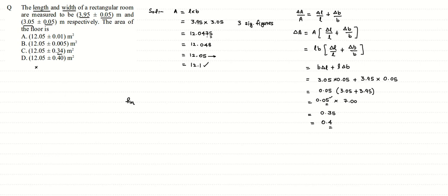The final answer should have been 12.1 plus minus 0.4 meter square. But the given answer to us is 12.05 plus minus 0.34 meter square. So actually none of the options match the correct answer. But the closest answer that is taken as the correct answer is option C.